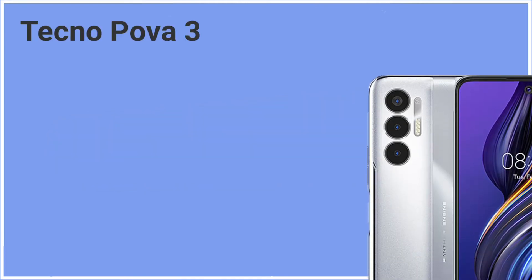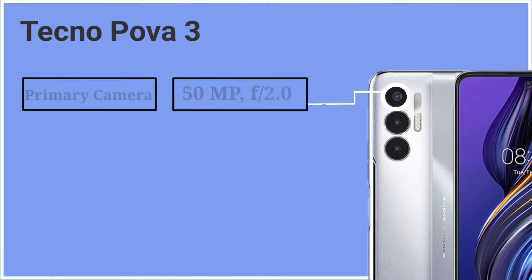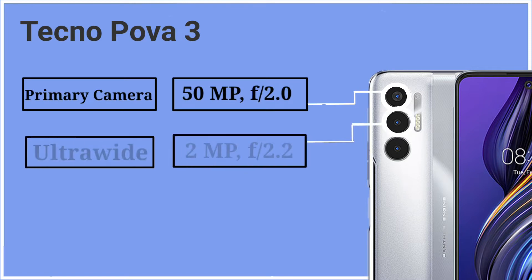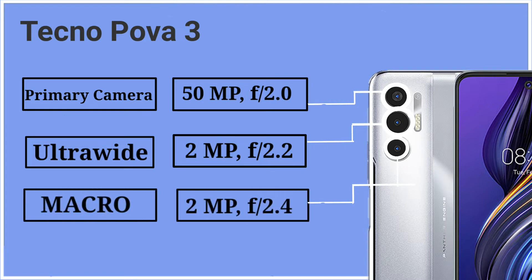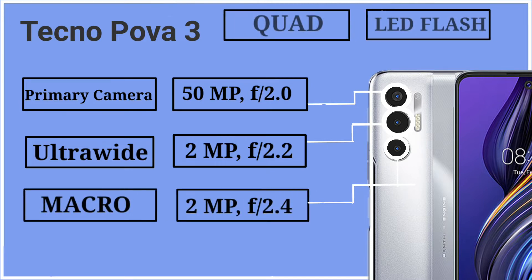Let's talk about both phones' cameras. Starting with Tecno Pova 3: it has a triple camera setup. Its primary camera is 50 megapixels, aperture f/2.0; ultrawide 2 megapixels, aperture f/2.2; macro camera 2 megapixels, aperture f/2.4; and quad LED flash.